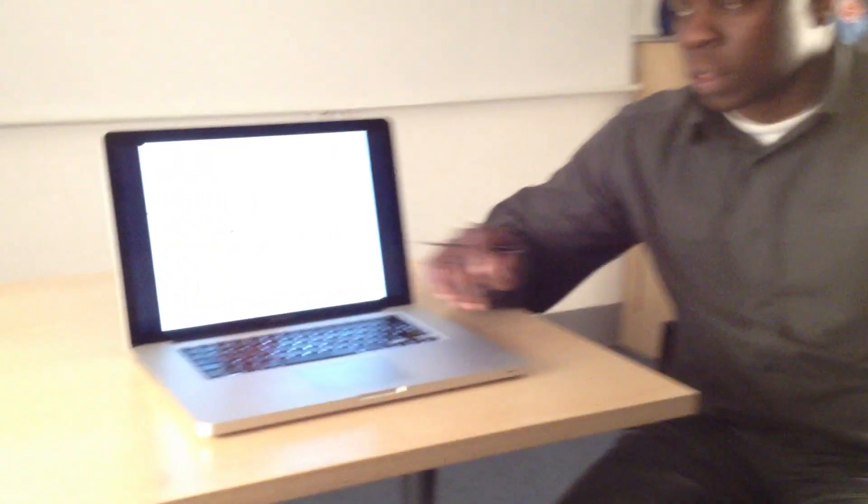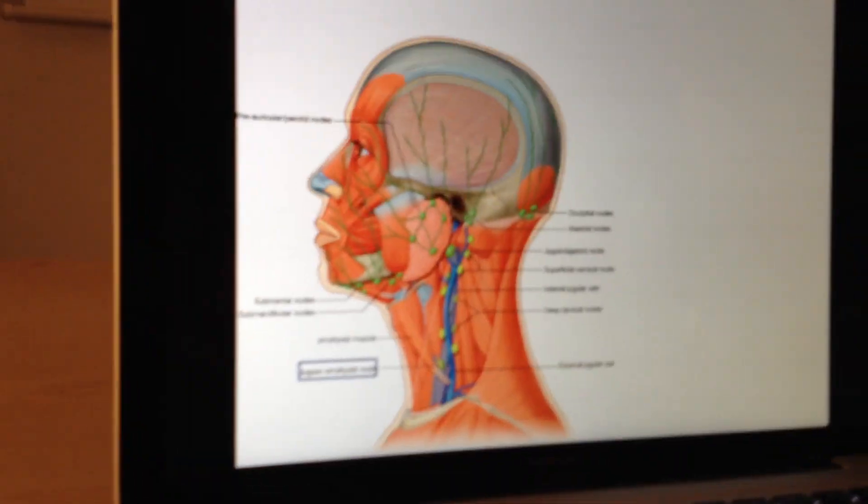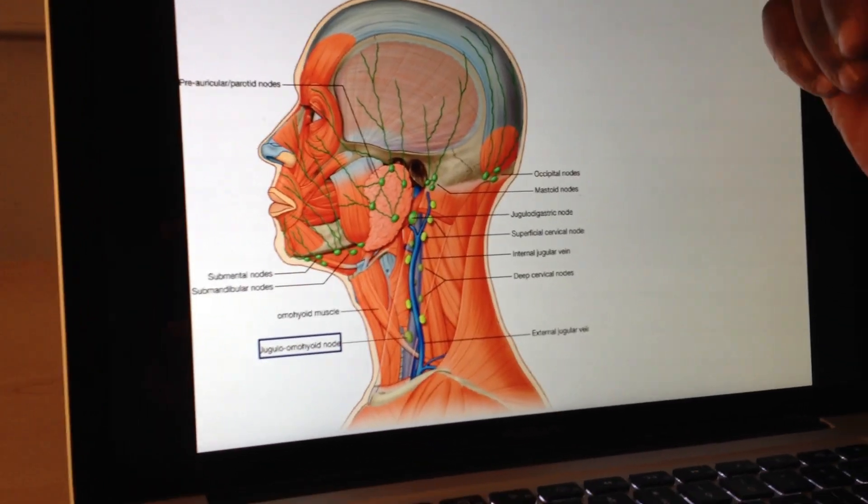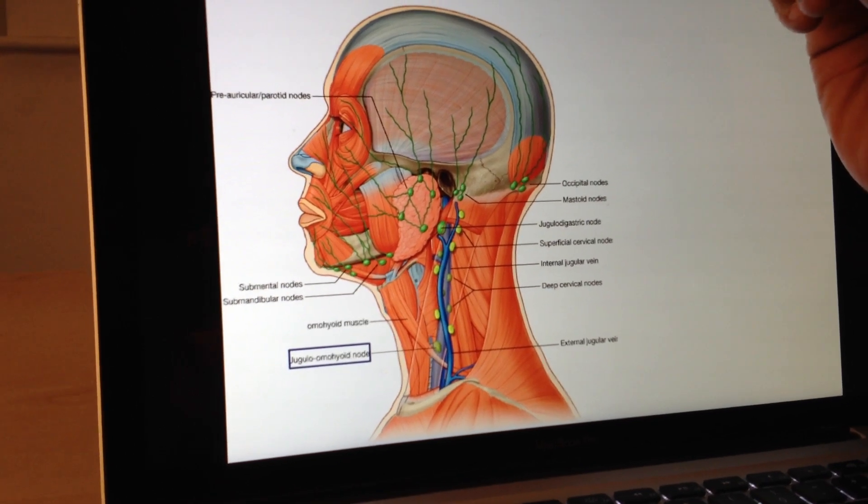If you look here at the screen, you can see some of the major lymph nodes which are associated with the head and neck. So let's just take it round in the order in which one would do a respiratory examination.